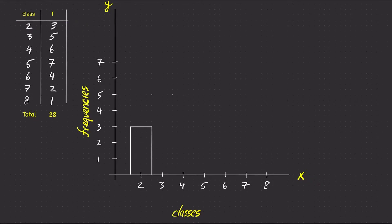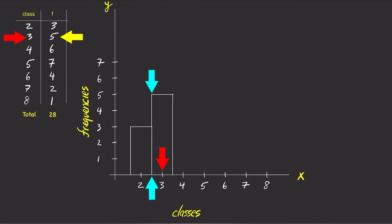For the second class three, the frequency is five. So draw a rectangle with a height of five on top of the class three. Notice how the tick on class three is in the middle of each side of the rectangle, and there is no gap between the two rectangles.